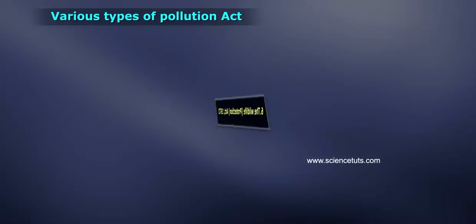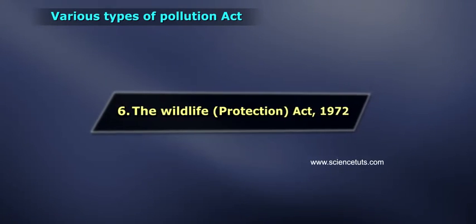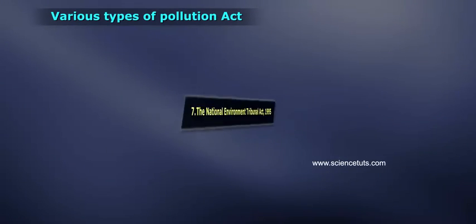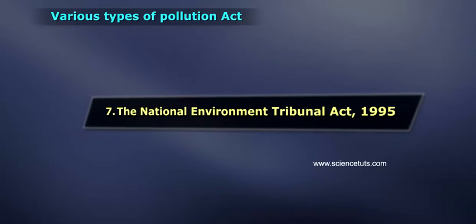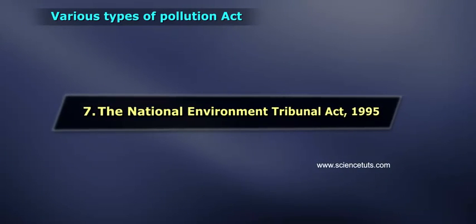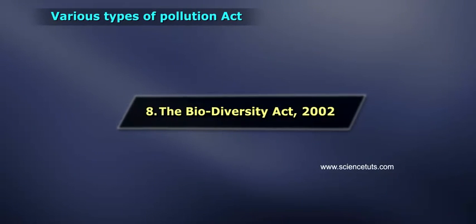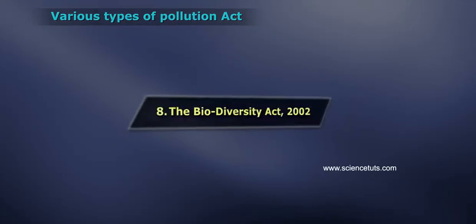Five — The National Environment Tribunal Act 1995. Six — The Wildlife Protection Act 1972. Seven — The National Environment Tribunal Act 1995. Eight — The Biodiversity Act 2002. Nine — The National Environment Tribunal Act 2005.